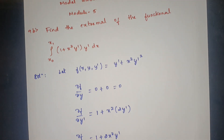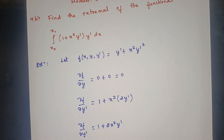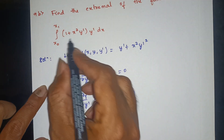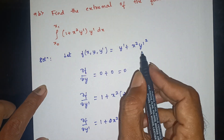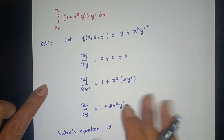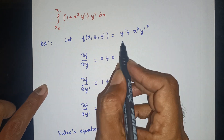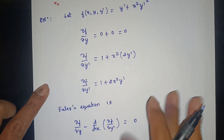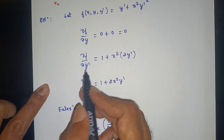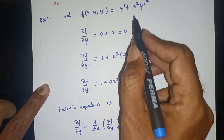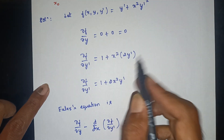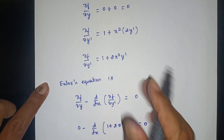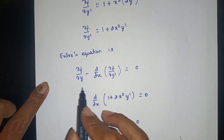Re-stating the setup: let f(x, y, y') = (y')² + x²(y')². Then ∂f/∂y = 0, and ∂f/∂y' = 1 + x²·2y' = 1 + 2x²·y'. The Euler's equation is applied next.